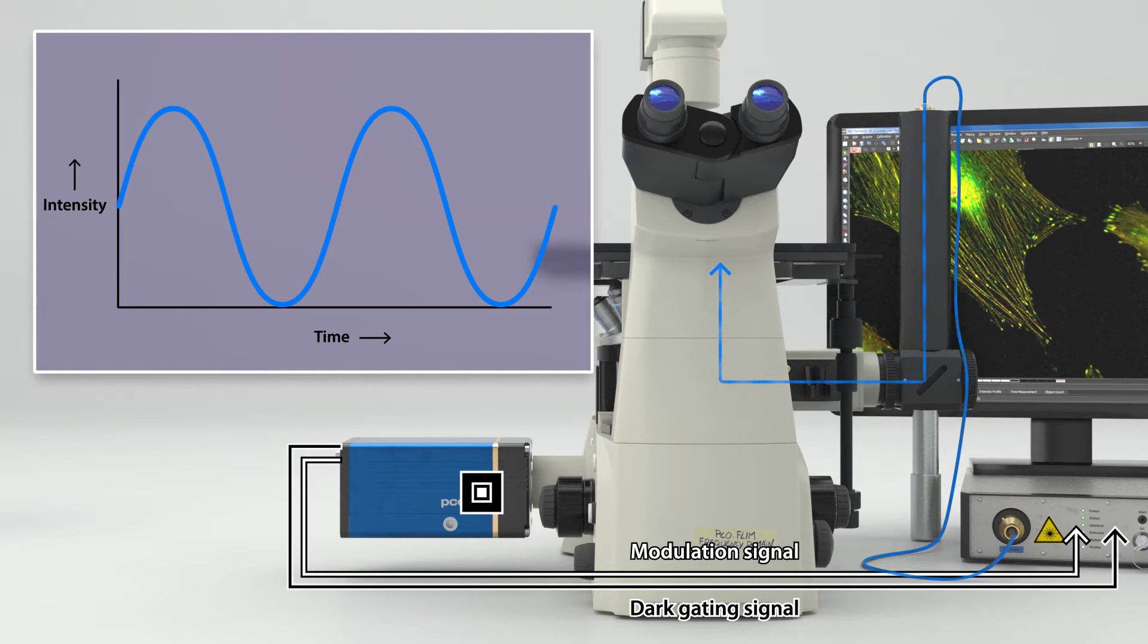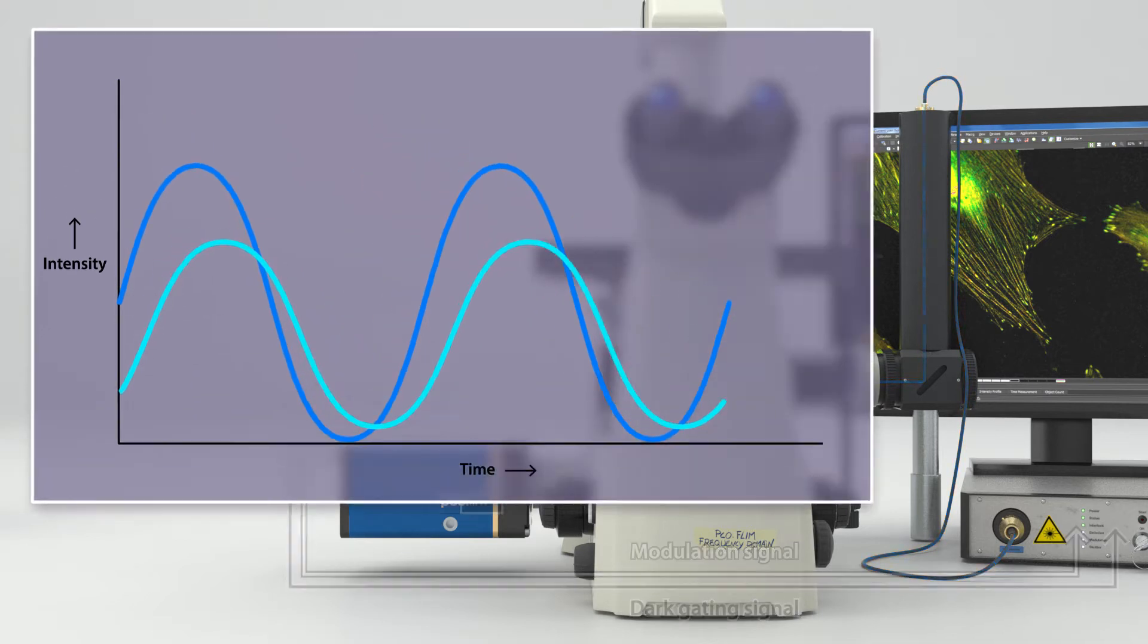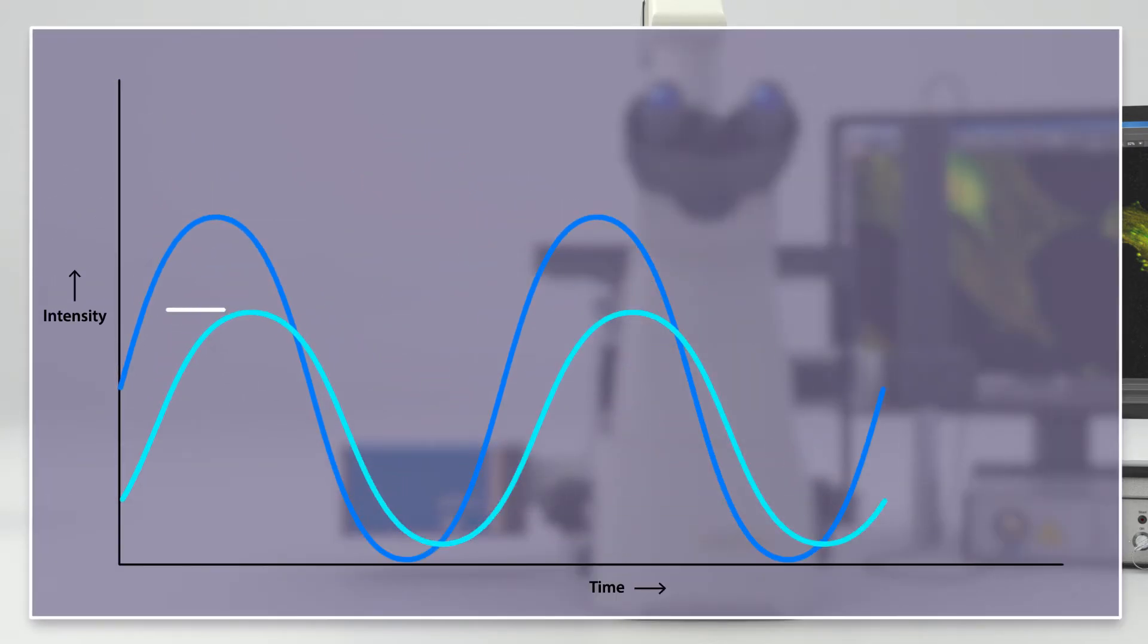Using a sinusoidal excitation waveform, the emission waveform is also a sinusoid with the same frequency. It is delayed in time and shows a decreased amplitude, a decreased constant component and a decreased modulation depth. By comparison of the excitation and emission sinusoids, the time or phase shift can be determined.